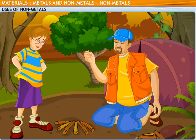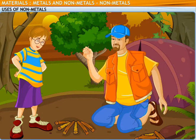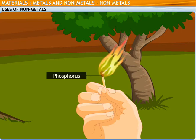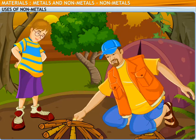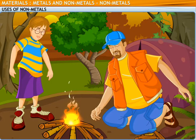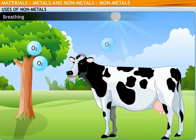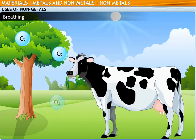Look, to light this bonfire, I'm using a matchstick. The head of this matchstick is coated with phosphorus, a non-metal. The oxygen in the air that we breathe is another example of a non-metal.